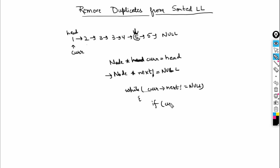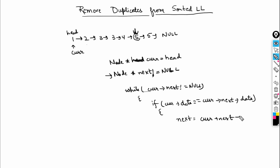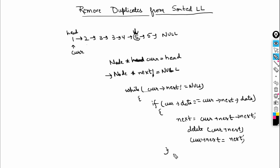If current's data equals current's next data, we do: next = current.next.next (skip over the duplicate), delete current.next, and then set current.next = next to reconnect the list. Otherwise, in the else condition, we simply do current = current.next to advance the pointer.